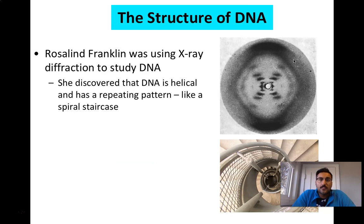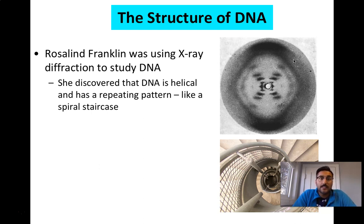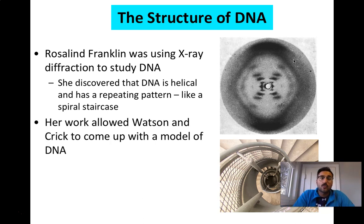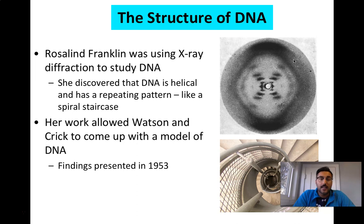Rosalind Franklin used x-ray technology and diffraction, which is a method of light movement, to study DNA. She discovered that DNA is like a helical, or twisted staircase pattern, and it repeated in intervals. Her work, along with Watson and Crick's, allowed the model of DNA we understand today to be presented in 1953.